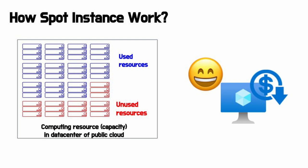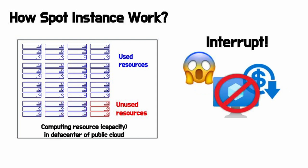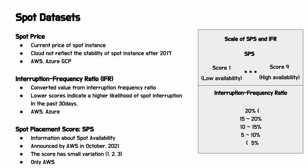So, how does a Spot instance work? This figure shows abstracted cloud resources. Cloud vendors always have unused resources in their data centers, and they are willing to sell them as much as possible for profit. Therefore, cloud providers offer unused resources at a discounted price, and users save money by using Spot instances. But Spot instances can be interrupted — if the data center runs out of resources, a Spot instance will be interrupted. This interruption makes users hesitate to use Spot instances. Cloud providers offer information on price and availability of Spot instances to encourage users to utilize them.